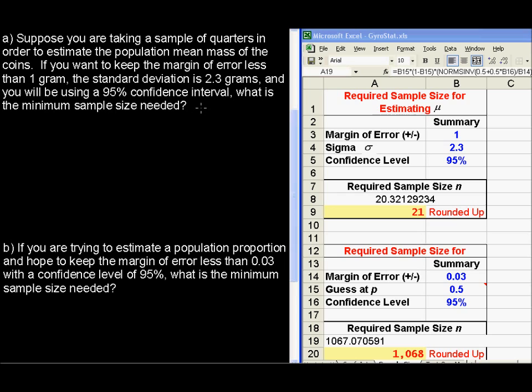Suppose you are taking a sample of quarters in order to estimate the population mean mass of the coins. If you want to keep the margin of error less than 1 gram, the standard deviation is 2.3 grams, and you will be using a 95% confidence interval, what is the minimum sample size needed?